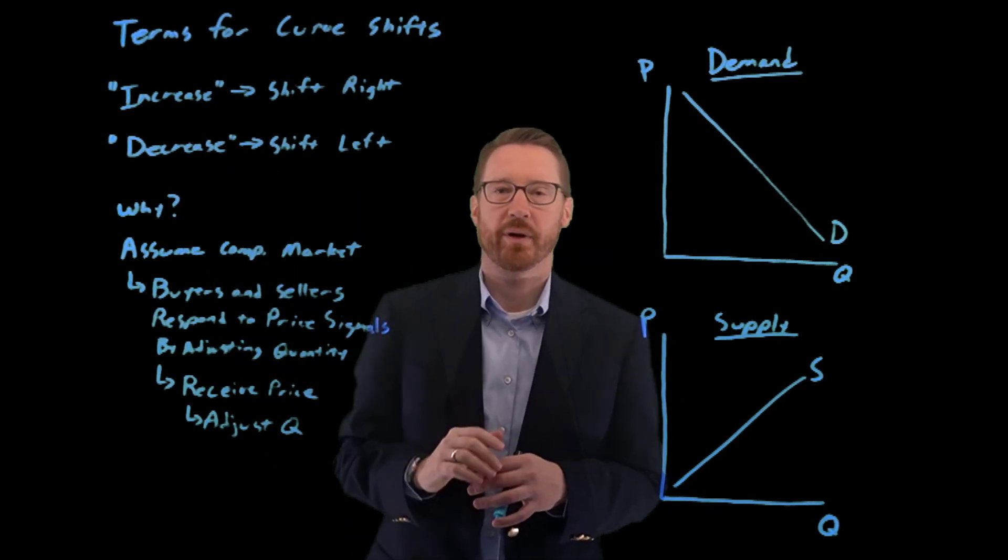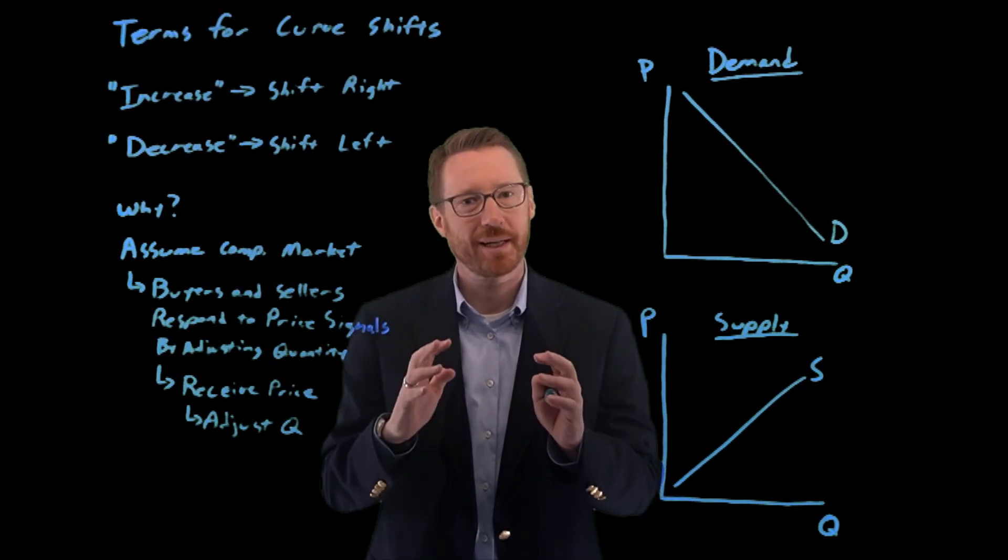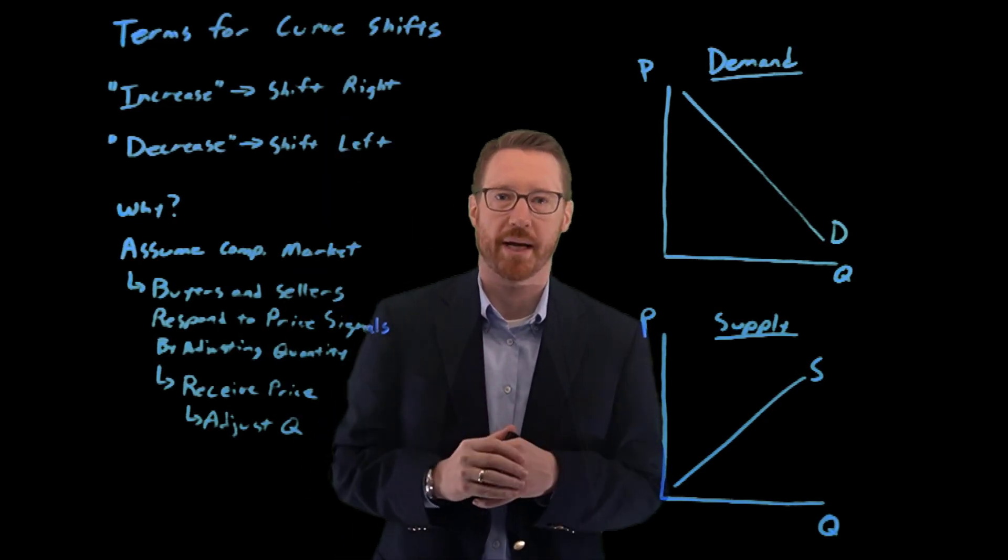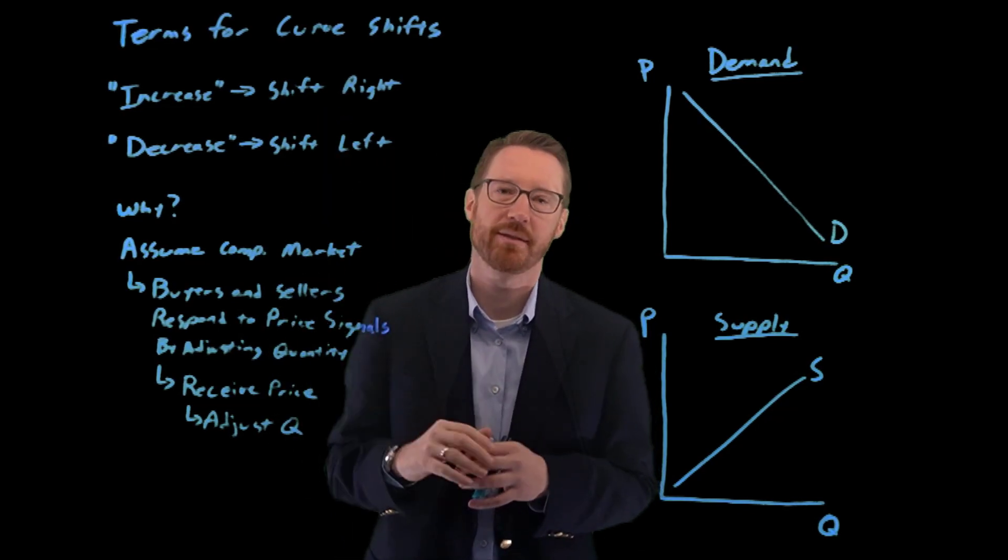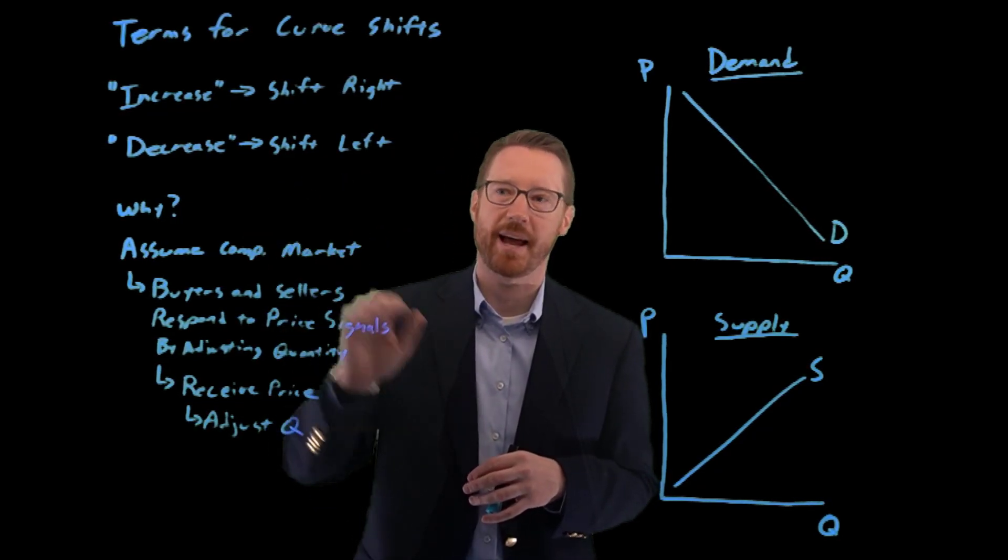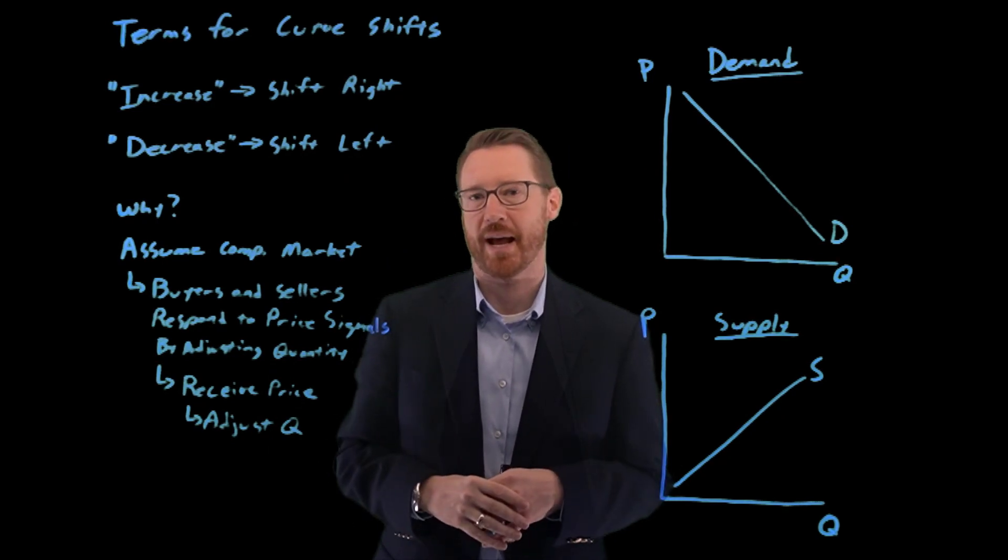An increase in demand or an increase in supply means that the curve shifts to the right. And a decrease in demand or a decrease in supply means the curve shifts to the left. So why is that?